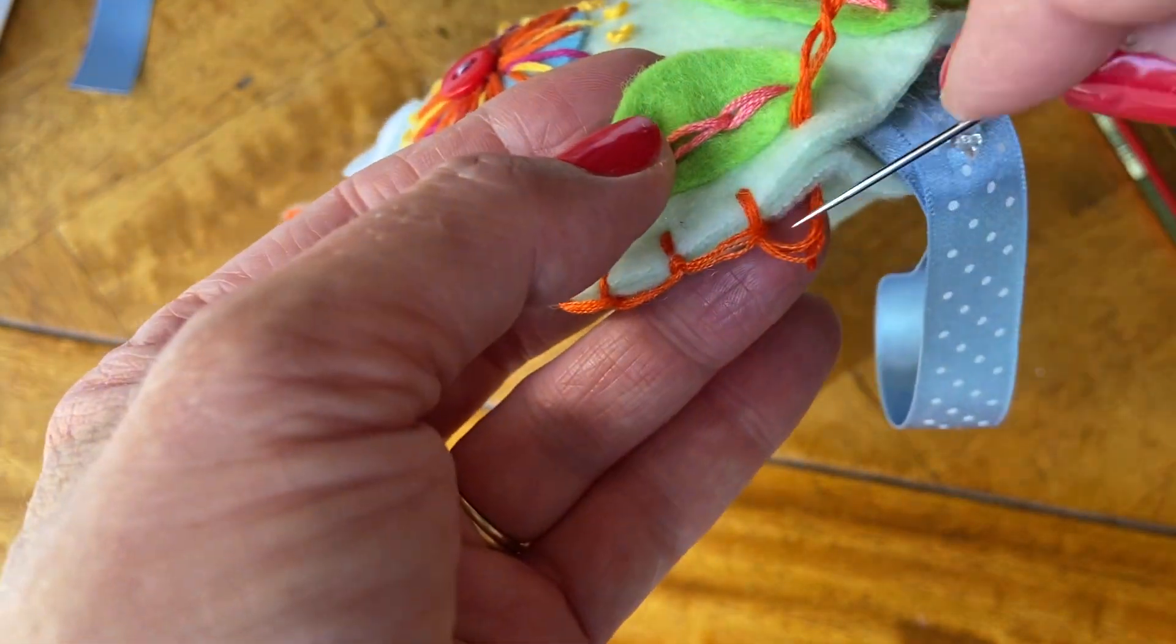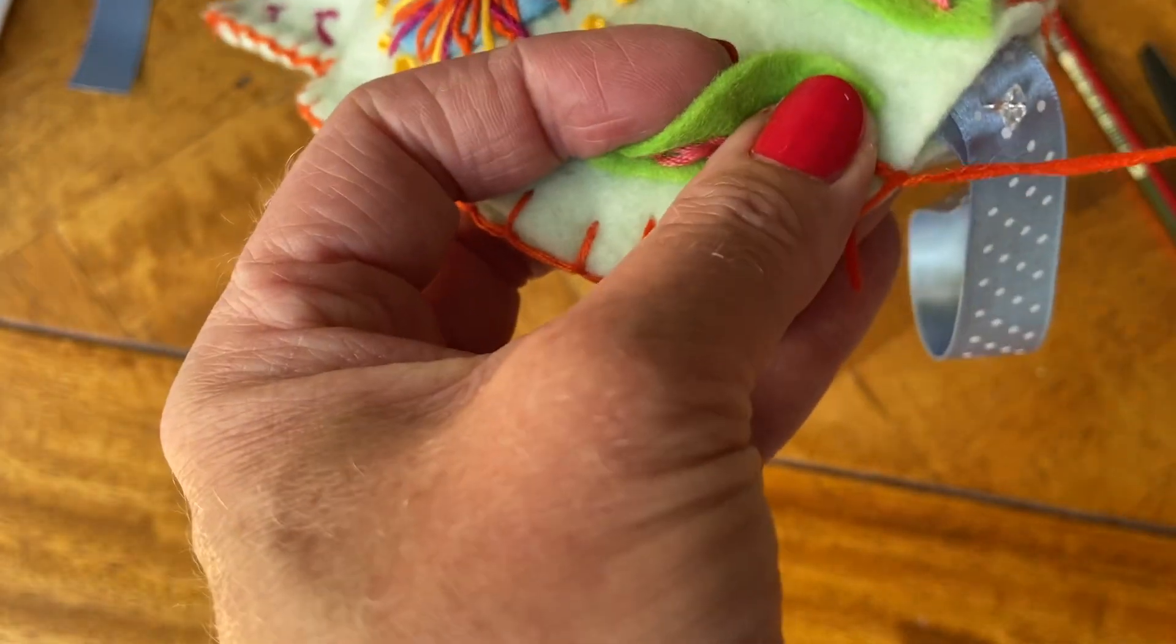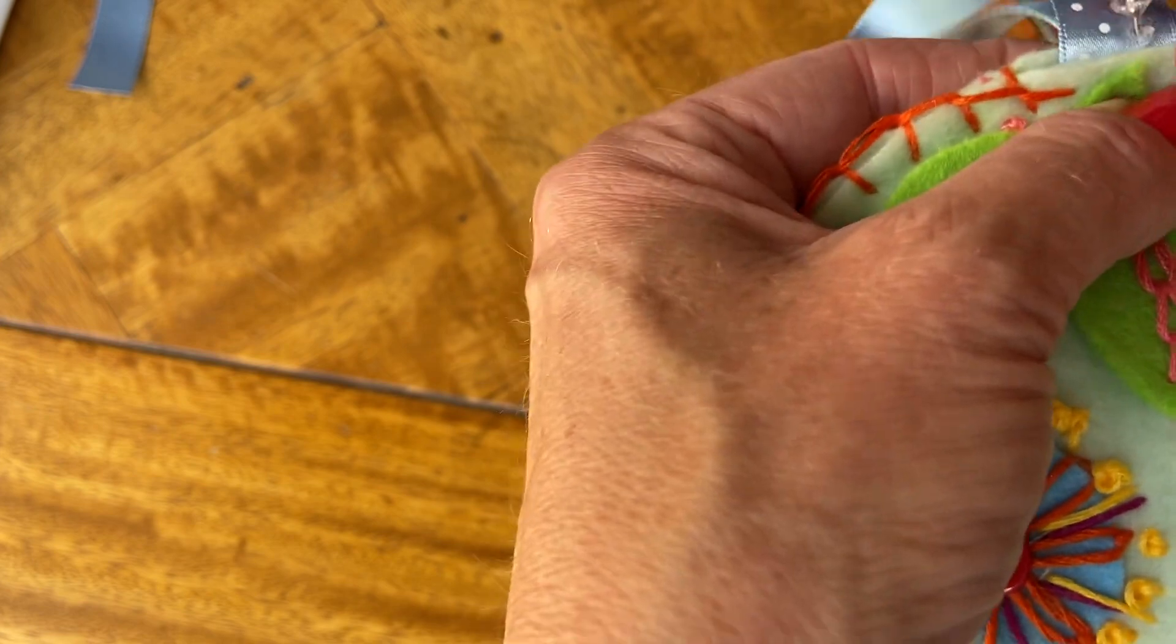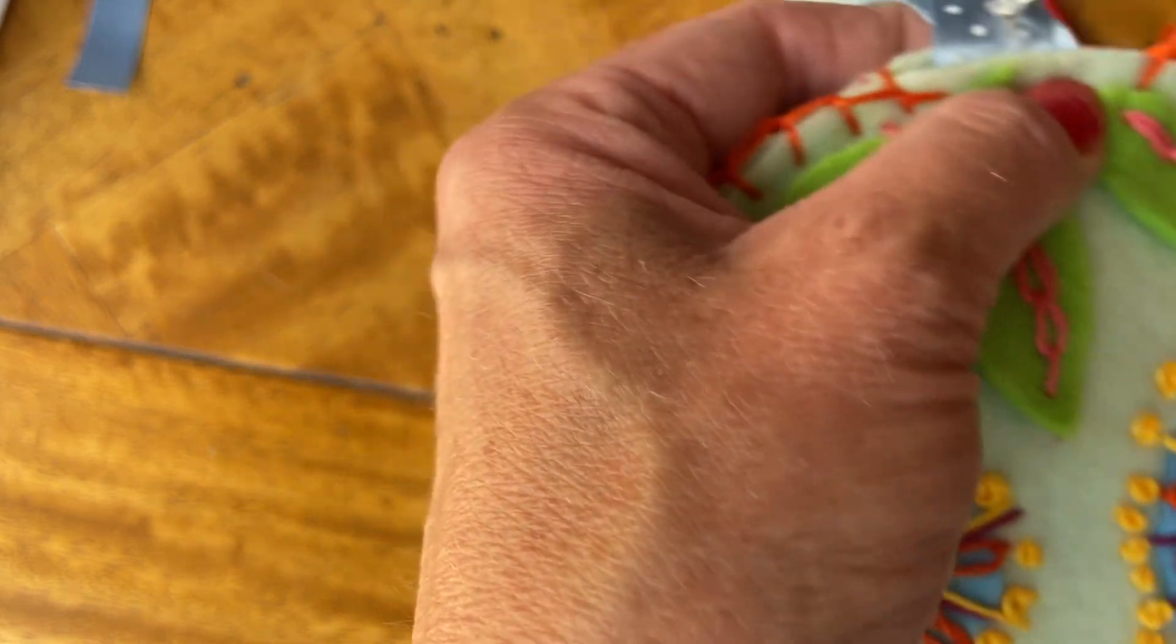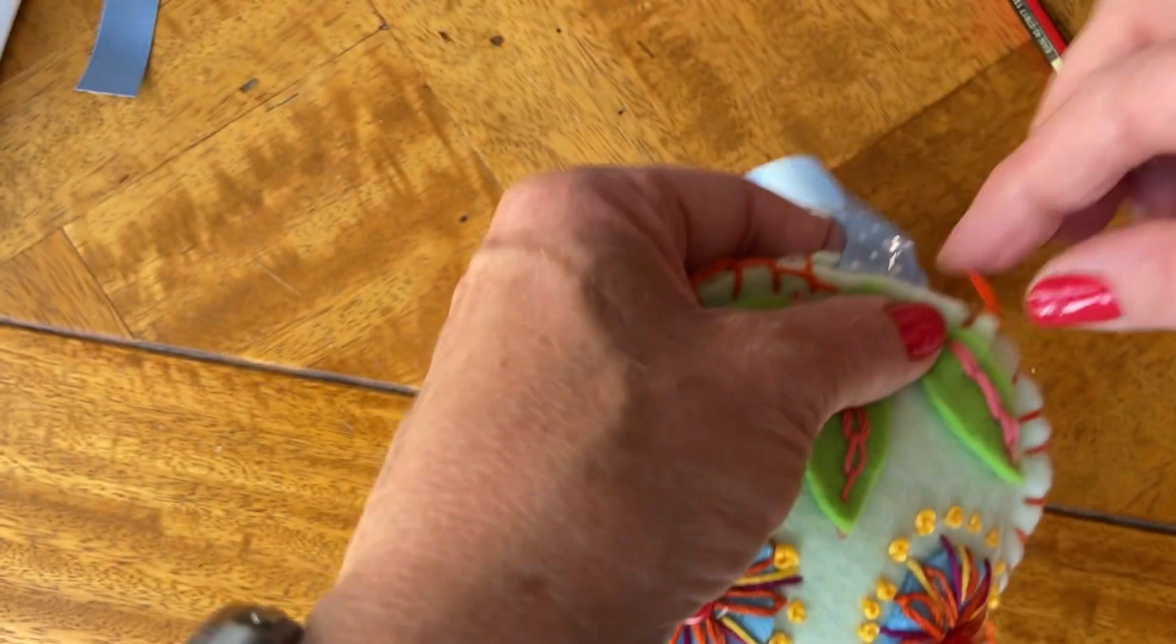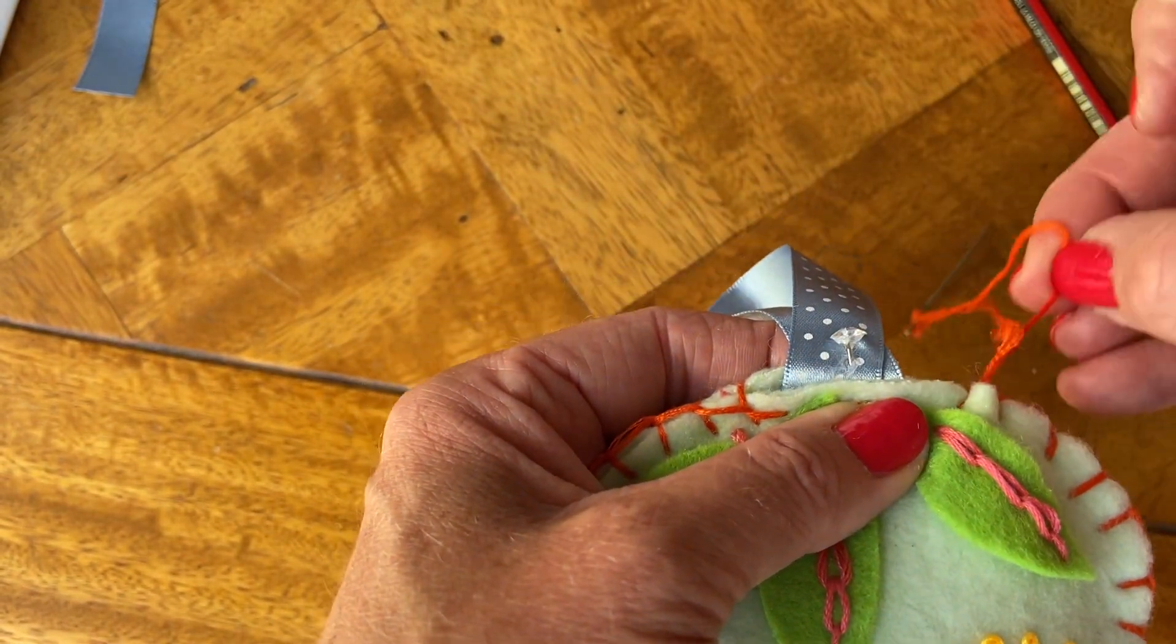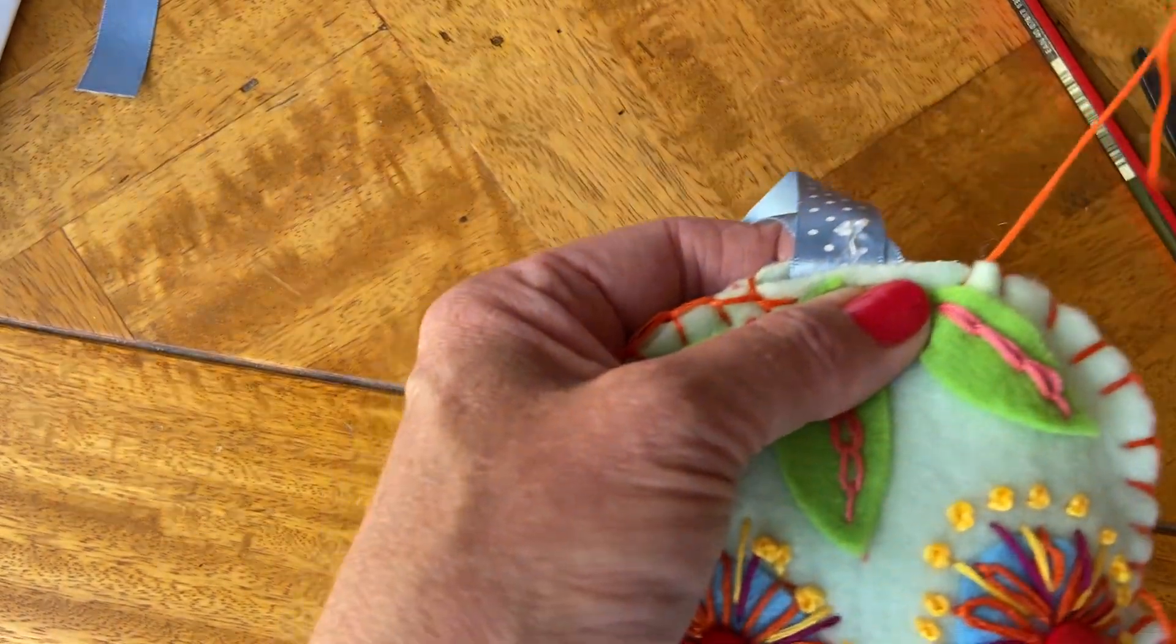And because we can't go around the ribbon with the blanket stitch, we're just going to finish that off, making sure the pin's sticking up so that it's not completely embedded into the piece, so that you can see but it's also holding the ribbon in place.